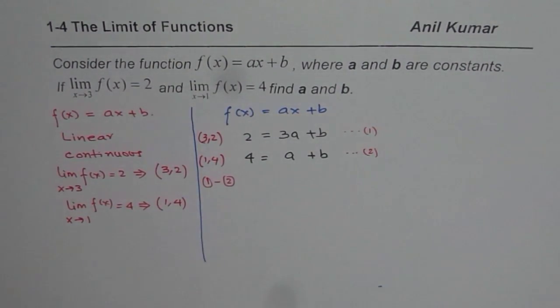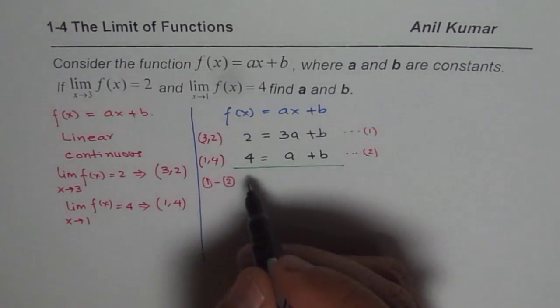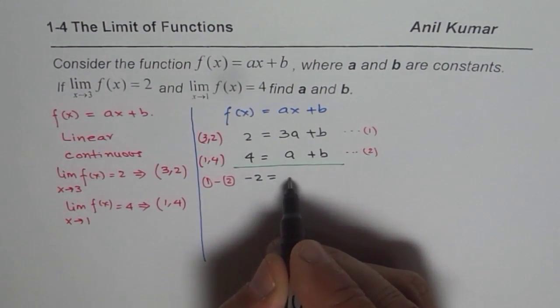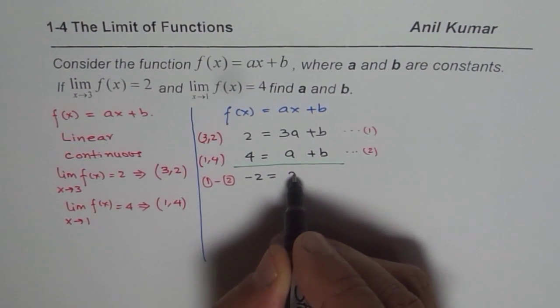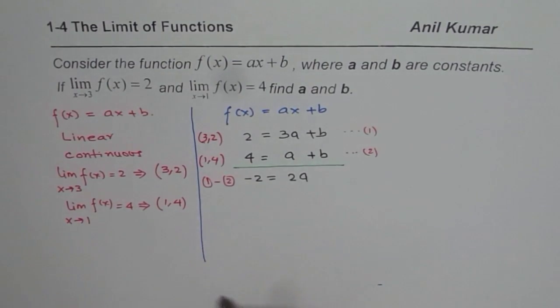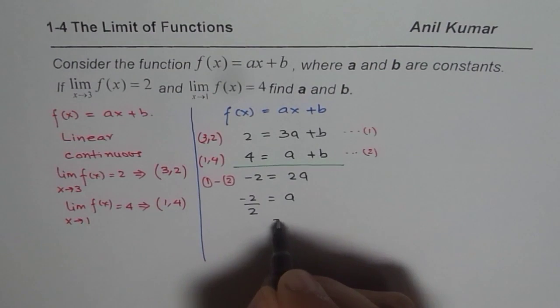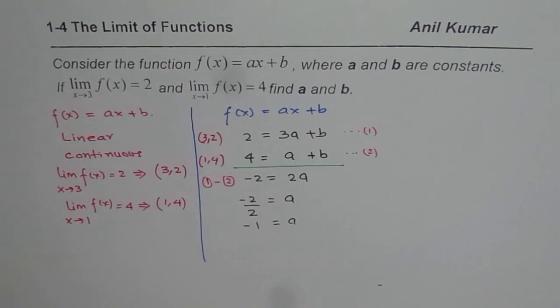So if I take away one from the other, in that case, 2 minus 4 is minus 2 equals 3 minus 1 is 2. So we get 2a, b minus b is 0. So from here we can solve for a, a is minus 2 over 2 and we find that a equals minus 1.